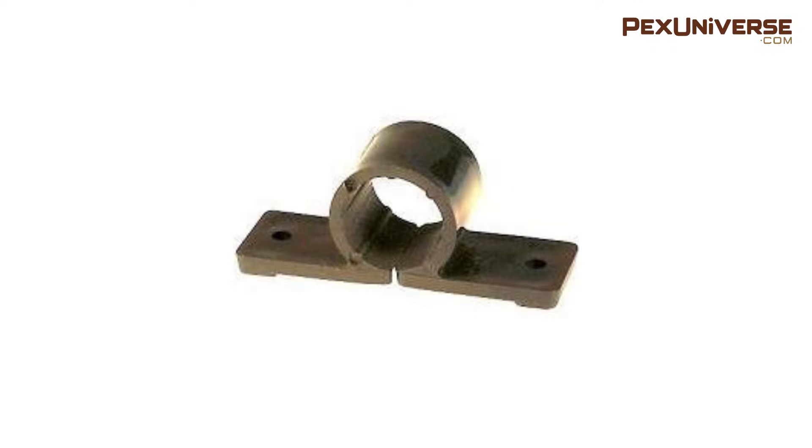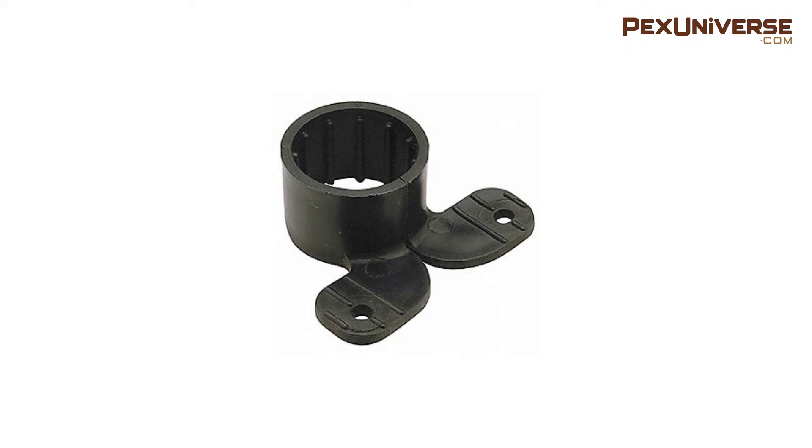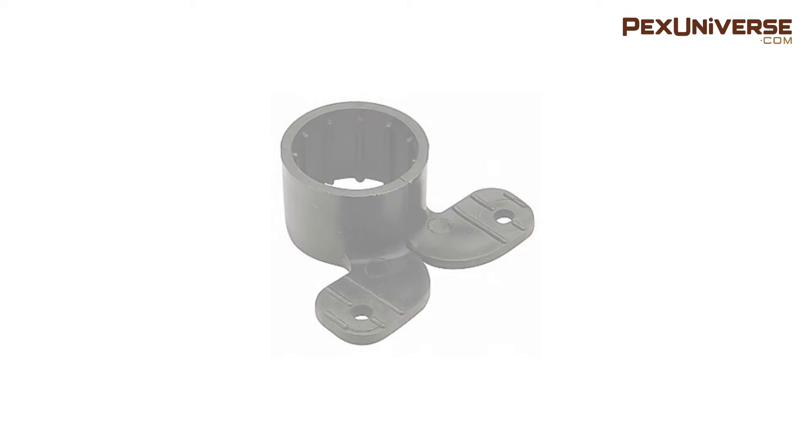Plastic pipe straps offset the pipe about 1/8 of an inch to 1/4 of an inch from the surface depending on the size and both are secured using screws.